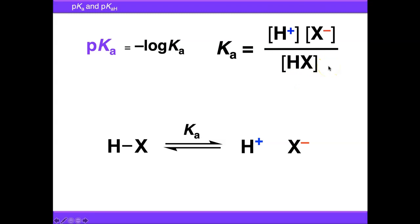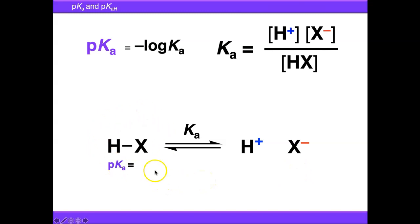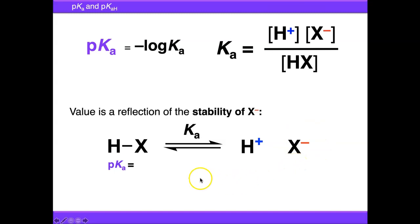When we talk about the pKa value for a molecule, we're generally referring to the molecule on the left-hand side of its equilibrium before it's broken down into H⁺ and X⁻. The position of this equilibrium and the value of the pKa is a reflection of the stability of X⁻. The more stable X⁻ is, the more the equilibrium will be tilted to the right, and vice versa.